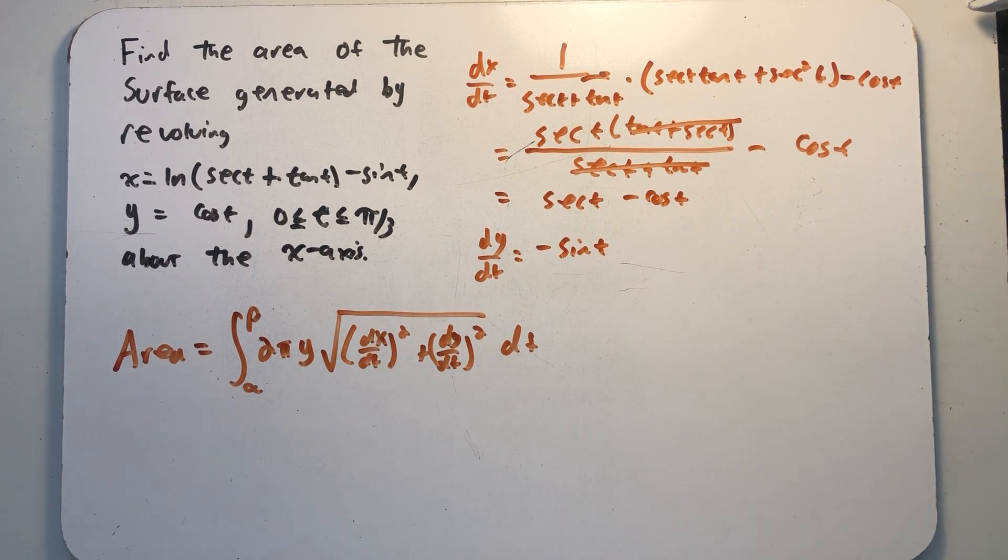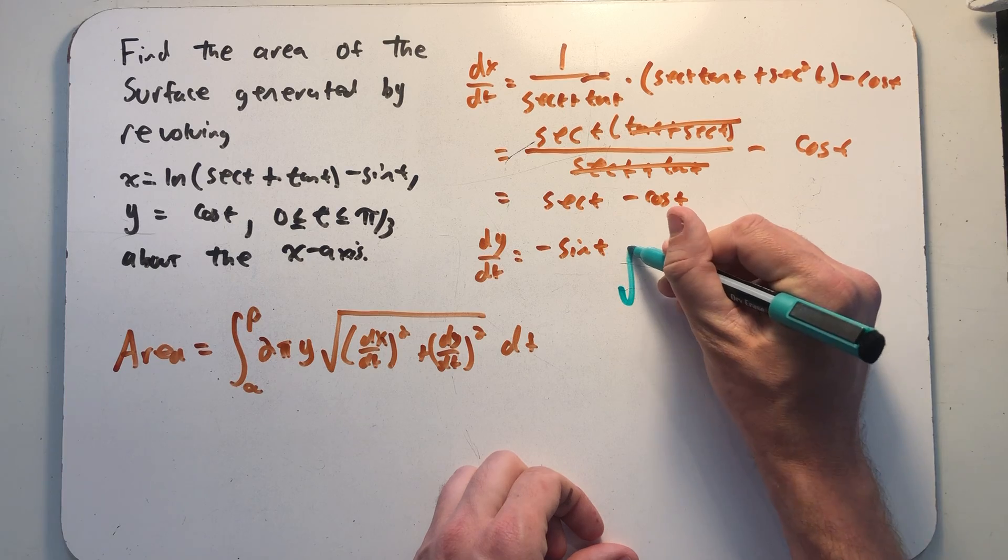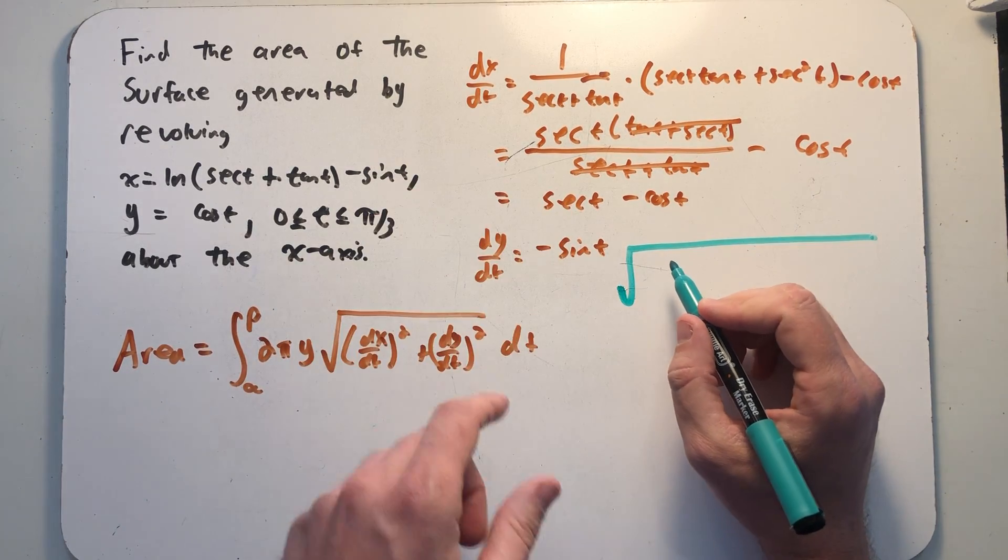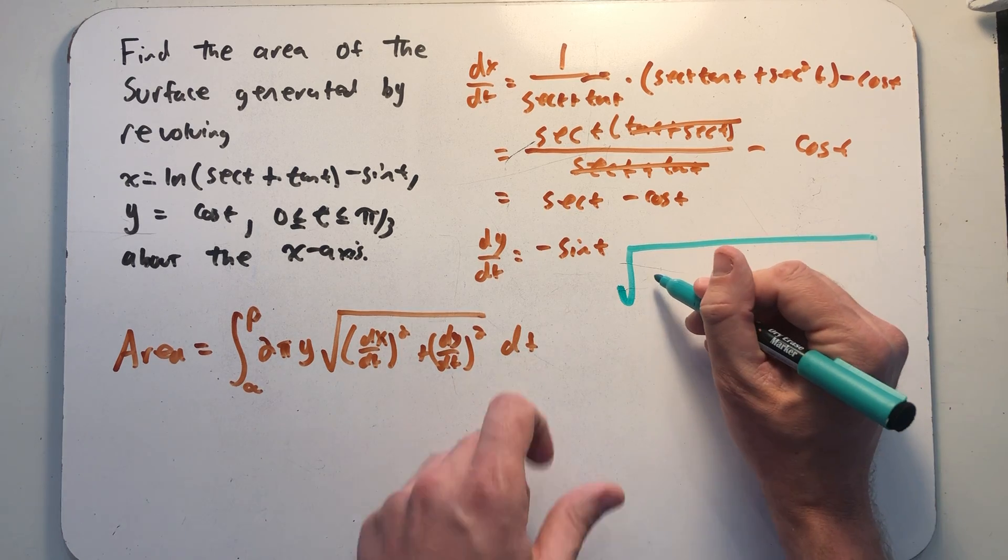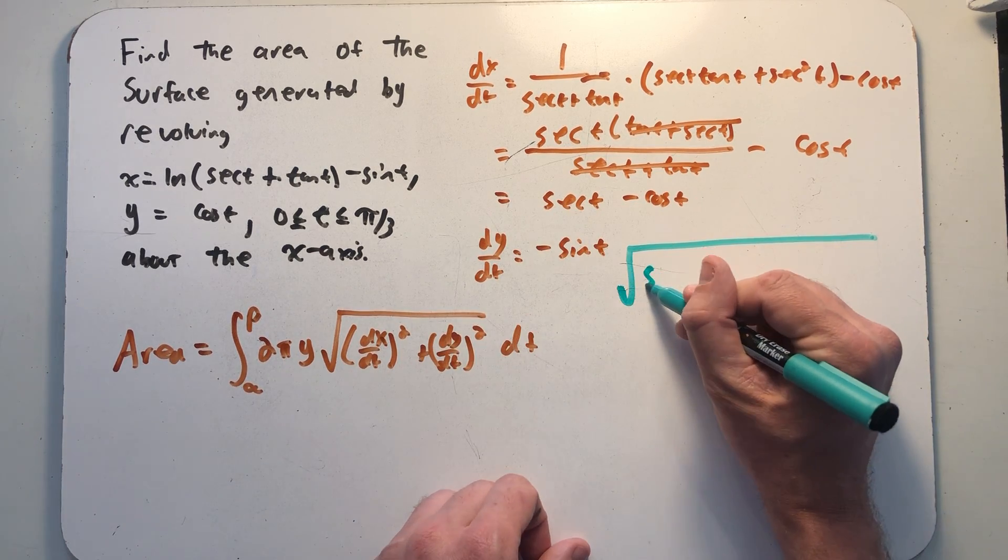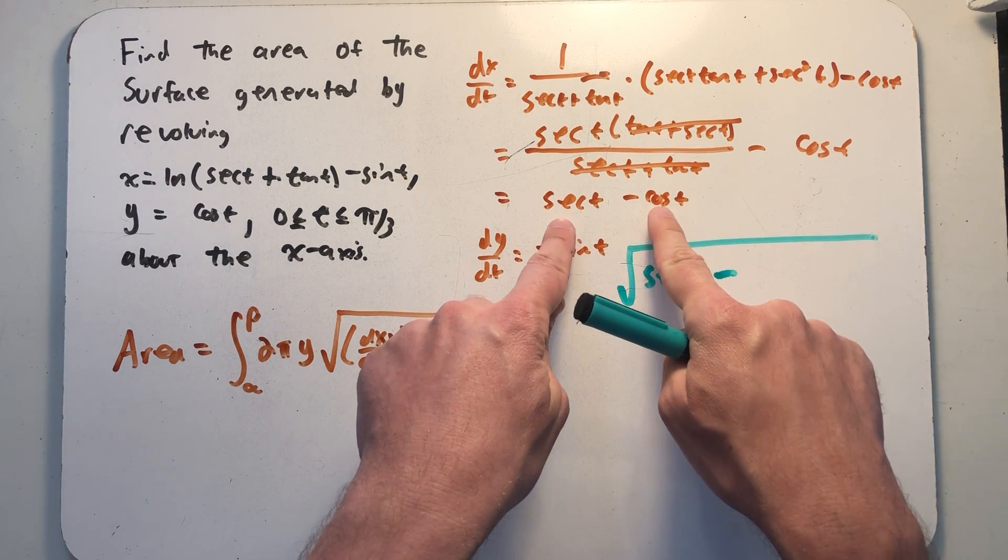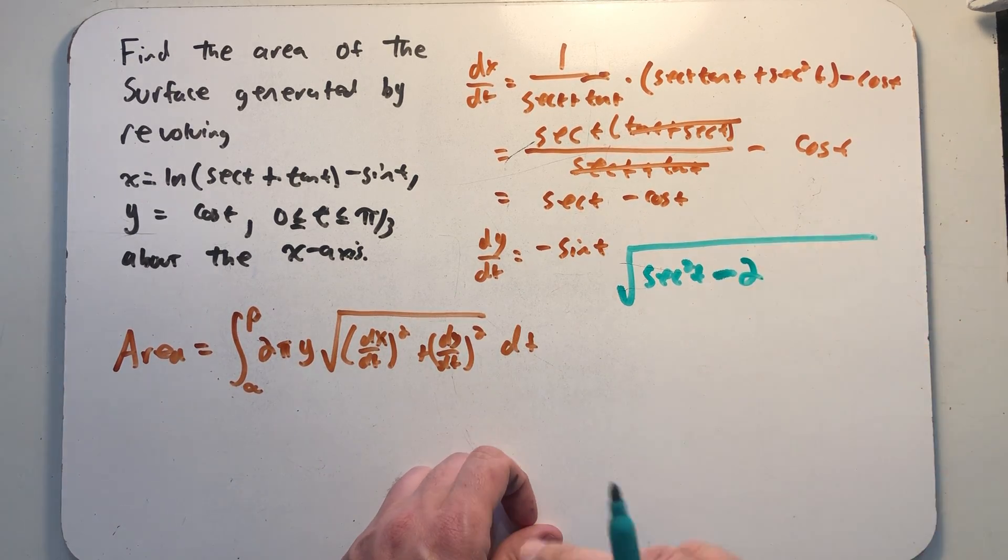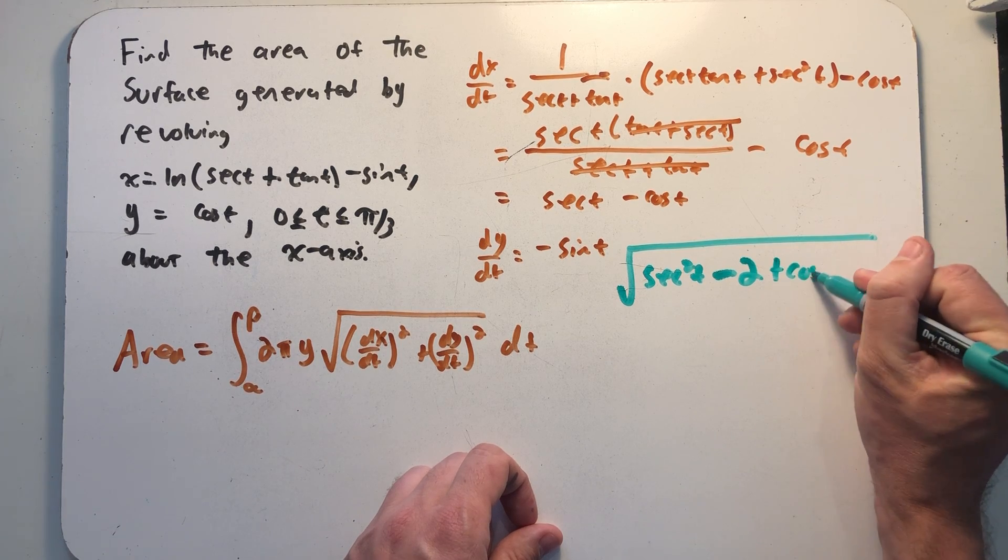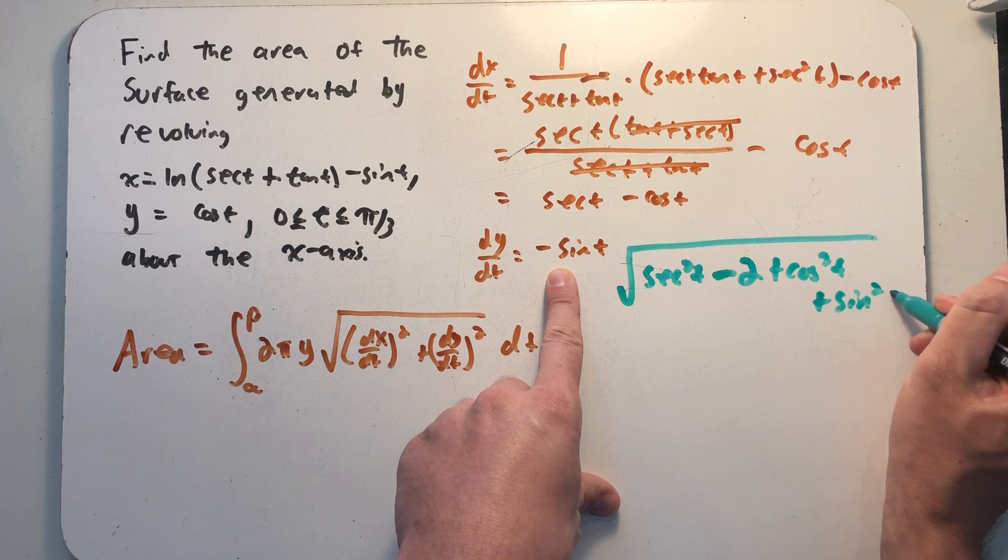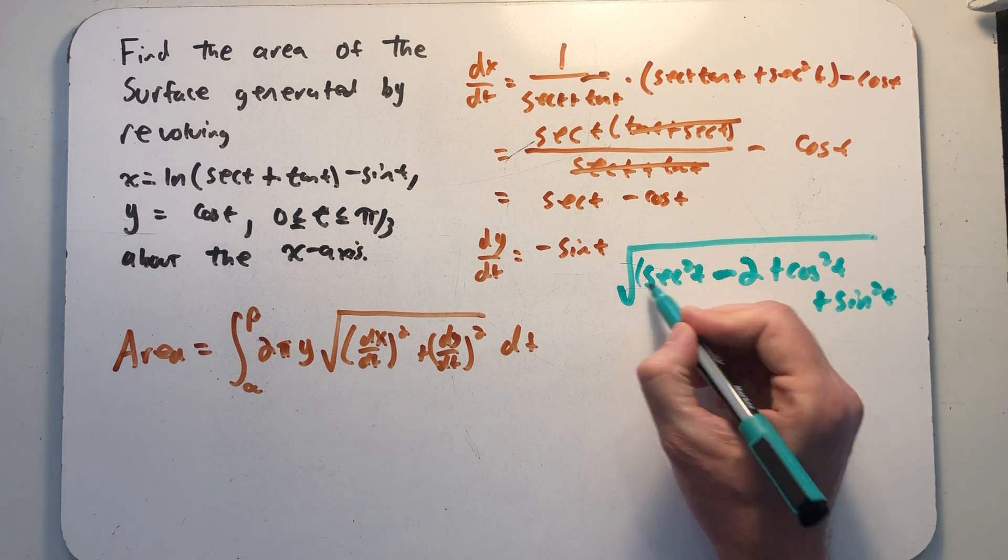Let's work on this square root part of our integrand to make it a little easier to deal with. I always like taking care of things like that on some scratch paper before I get to my integration. And so I get dx/dt, and I need to square it. Let's see what happens when I square that. I'll have secant squared t minus, well, if I multiply cosine and secant together, I get one, so I have a minus two there, plus cosine squared t.